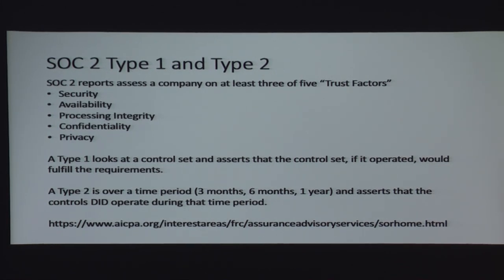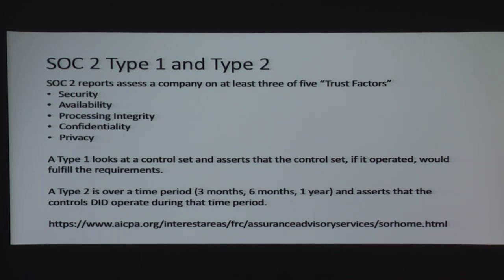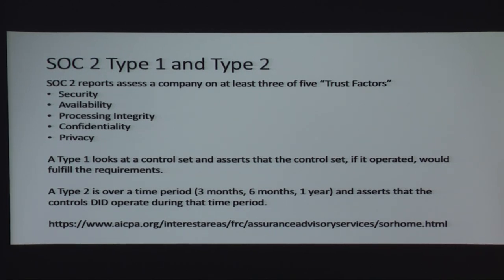A SOC 2 assesses a few trust factors; security, availability, and integrity are the three most common. Type 1 looks at whether a company's security controls look pretty much okay. Type 2 is over a period — traditionally six months or a year — and requires evidence that every single control operated. If you can't get evidence, you get an exception noted as a footnote. I look through and check things like access control review frequency. Sometimes I'll look for footnotes and then contact the company and say, 'Hey, I see you had an exception and didn't do your access control reviews for four months — I'm concerned about who has access to my very sensitive data.'